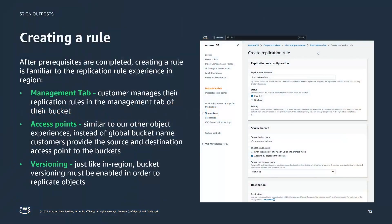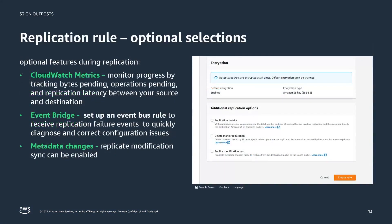After completing those two steps, creating a replication rule will seem familiar compared to replication in region. Within the management tab of your bucket, you'll be able to create a replication rule. You'll select your source bucket access point and your destination bucket access point. Similar to in-region, versioning must be enabled on both the source and the destination. Optionally, you'll have three selections to create replication metrics sent to CloudWatch, delete marker replication, and replica modification sync for your metadata.